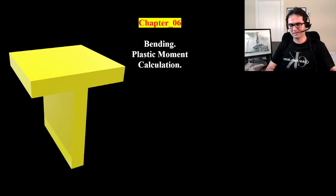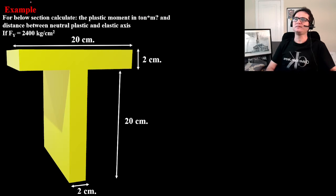In this example, we want to calculate first the plastic moment in ton-meter for a T-section, and also the distance between neutral plastic and elastic axis. If Fy is equal to 2400 kg/cm².